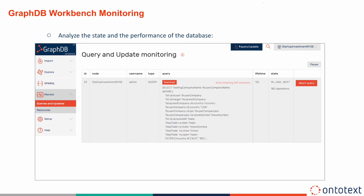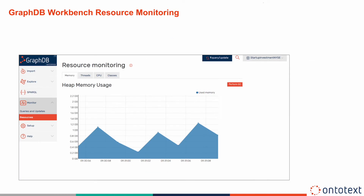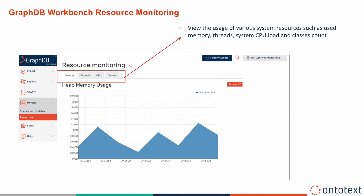You can use different metrics for analyzing the state and the performance of the database. The Monitor section gives you the opportunity to view all running queries or updates and to terminate them by pressing the Abort button. The Resource option shows you the usage of various system resources such as used memory, threads, system CPU load, and class count.